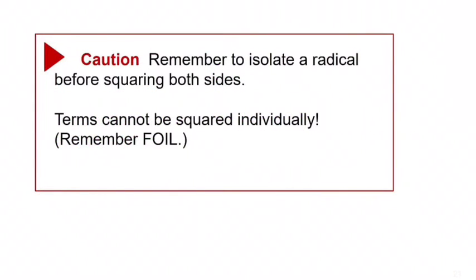Here's a word of caution. A common problem with these equations is that you have to isolate the radical before you square both sides. You cannot eliminate radicals by squaring term after term — you can only square a whole side at a time. So when there's more than one term on a side, you're going to need the FOIL method.